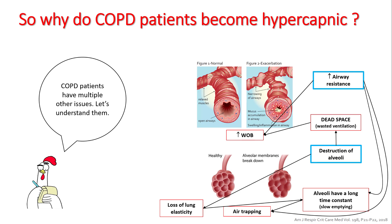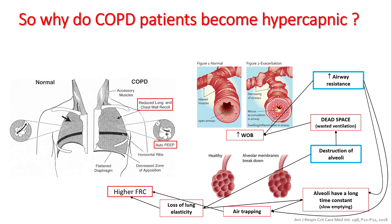Increased airway resistance combined with alveolar destruction results in alveoli with very long time constants — they are slow to empty, causing air trapping. Air trapping along with loss of lung elasticity results in these patients breathing at higher FRC. Breathing at higher FRC causes a more flattened diaphragm, placing diaphragmatic muscles in a compromised position. These patients also develop auto-PEEP because of air trapping, further increasing work of breathing.